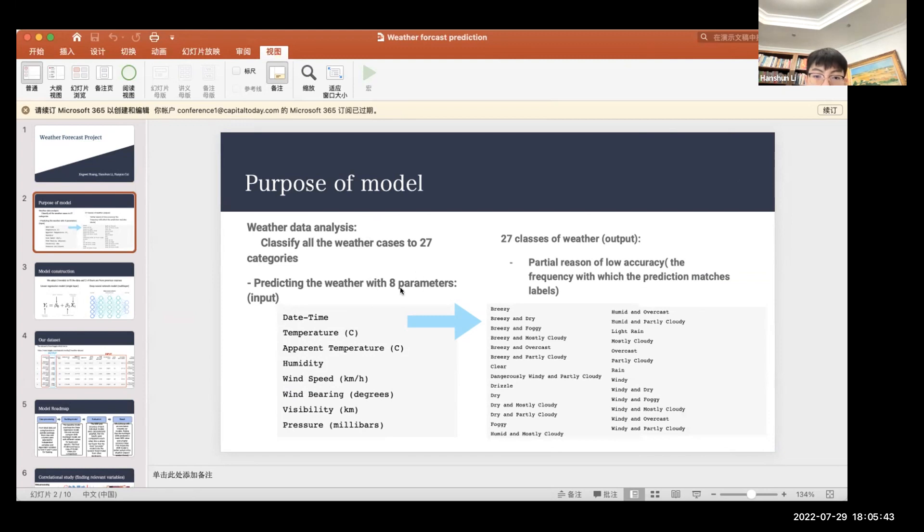We tried predicting the weather with eight parameters, basically the input shown down here, such as date, time, temperature, and stuff. And our output were the 27 classes of weather.